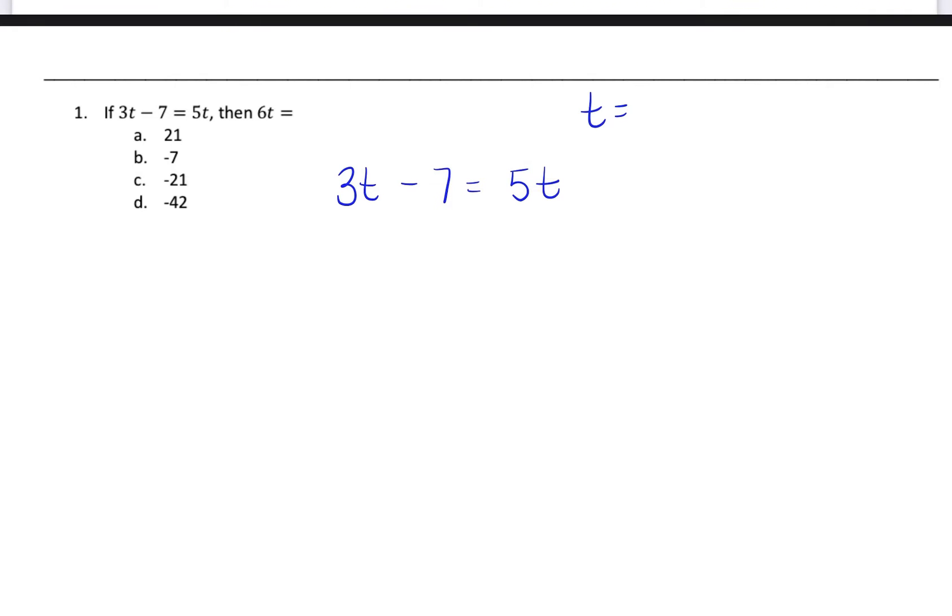So in this equation, my first step is I'm going to combine like terms. And so 3t and 5t are like terms because they both are terms with the letter T in it. So what I want to do is I want to get them on the same side as one another. And so what I'm going to do is I'm going to subtract 3t from both sides. And I'm left with negative 7 equals 5t minus 3t, which is 2t.